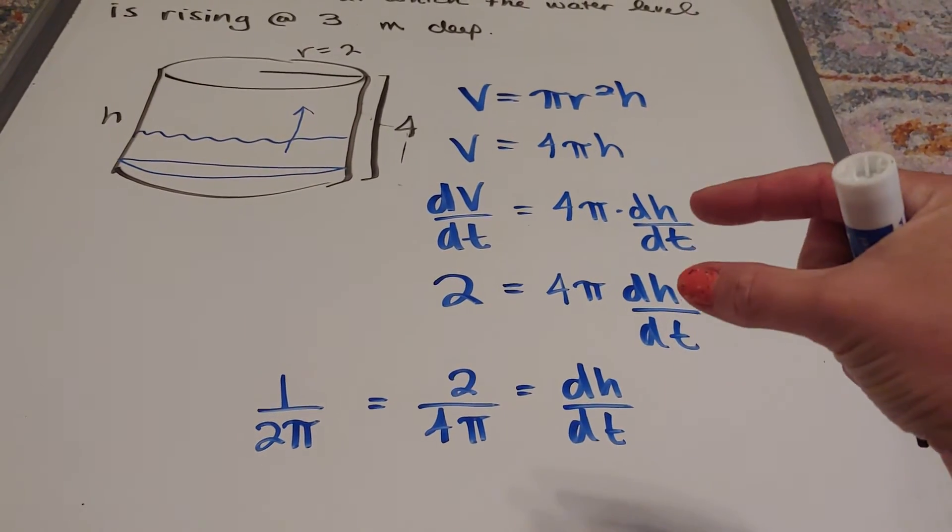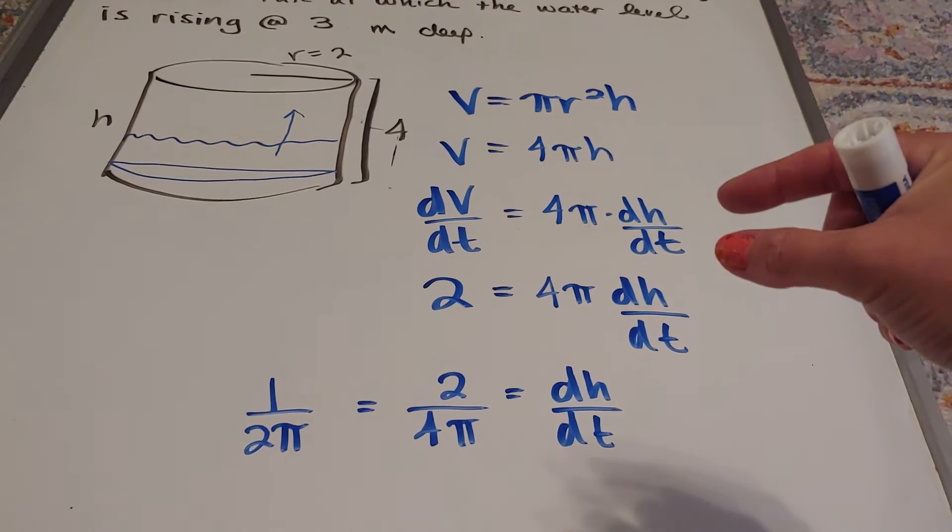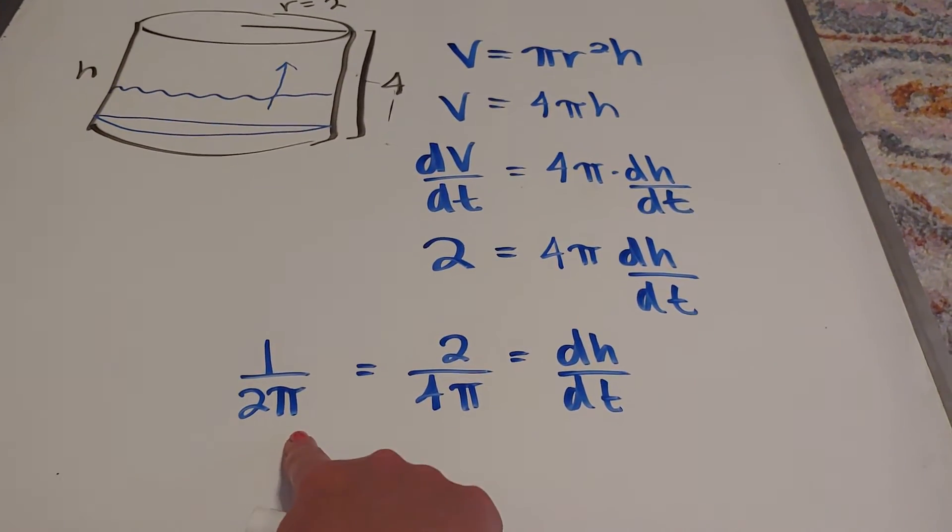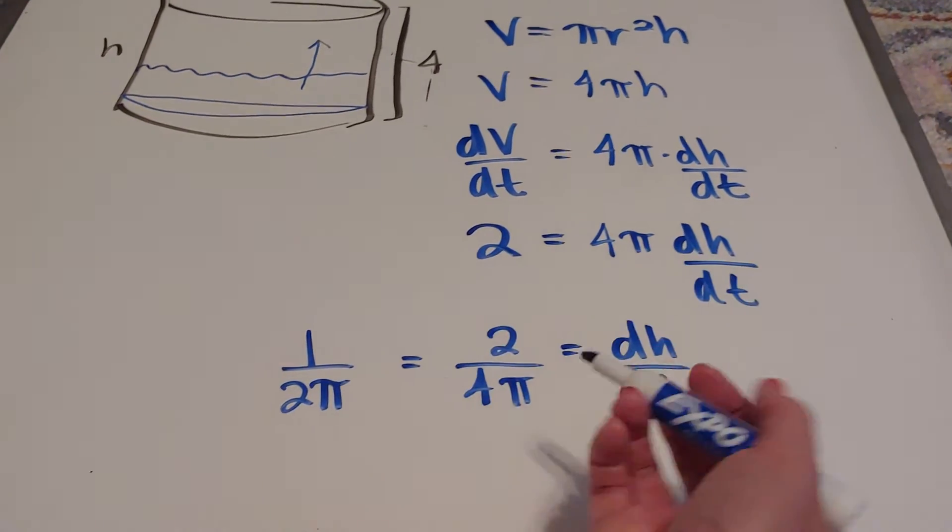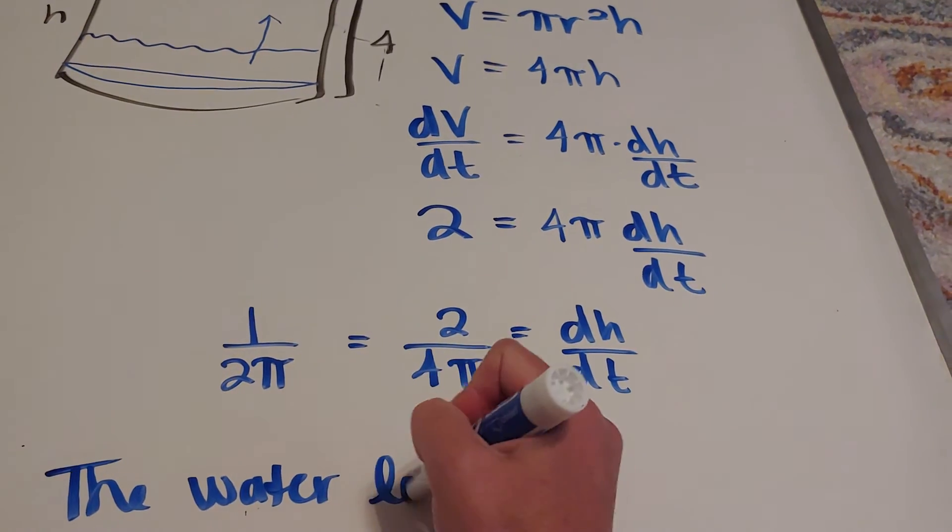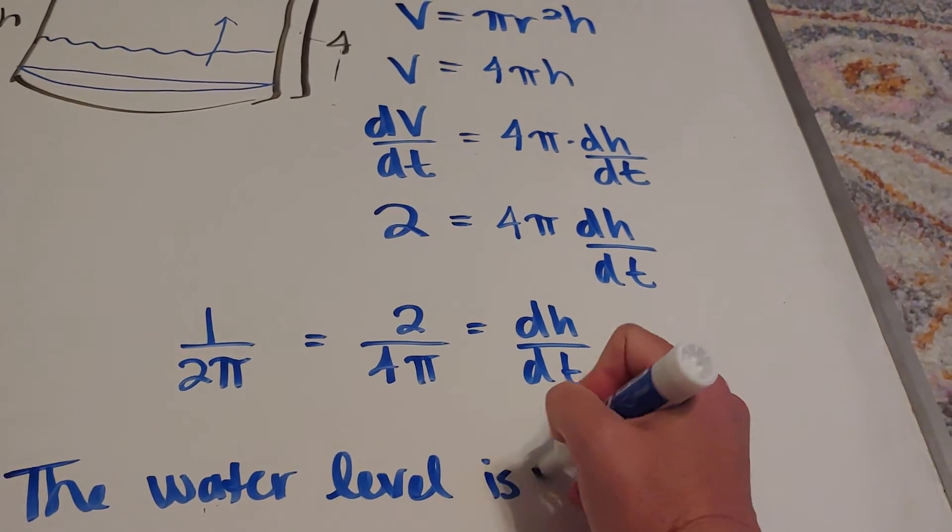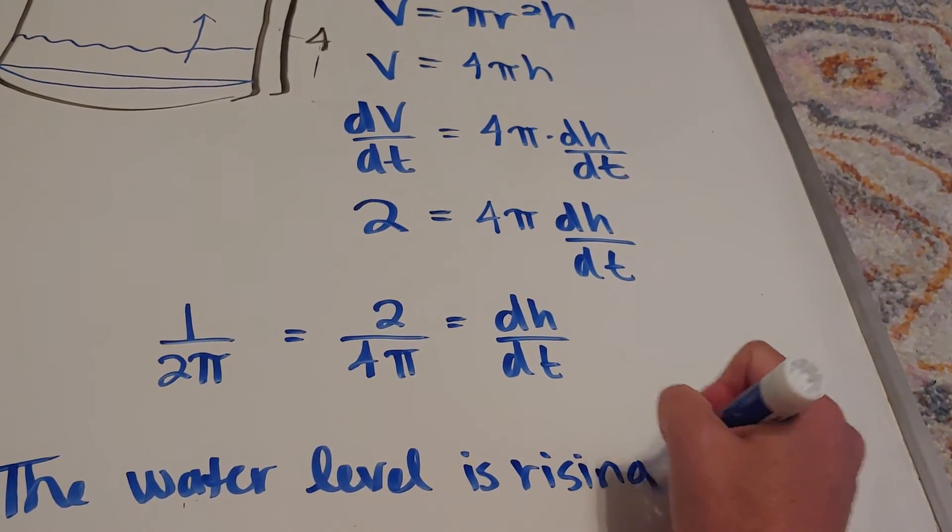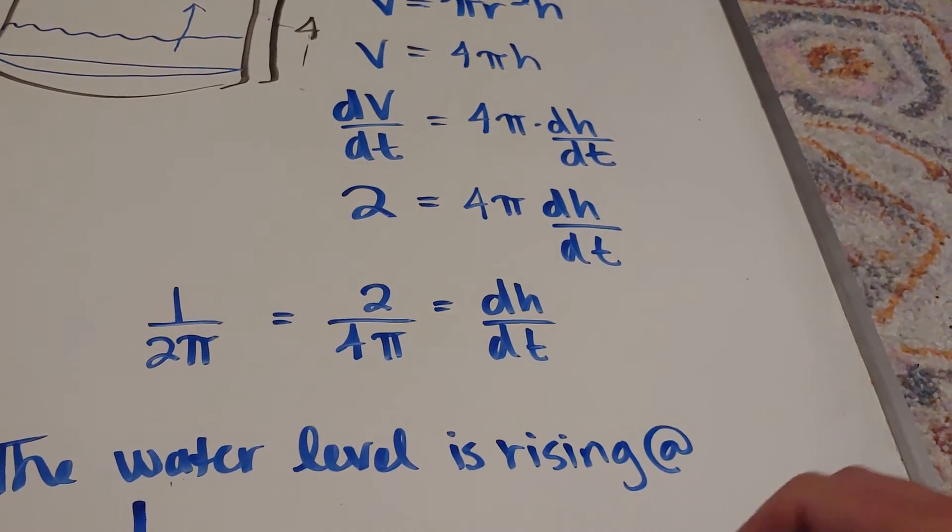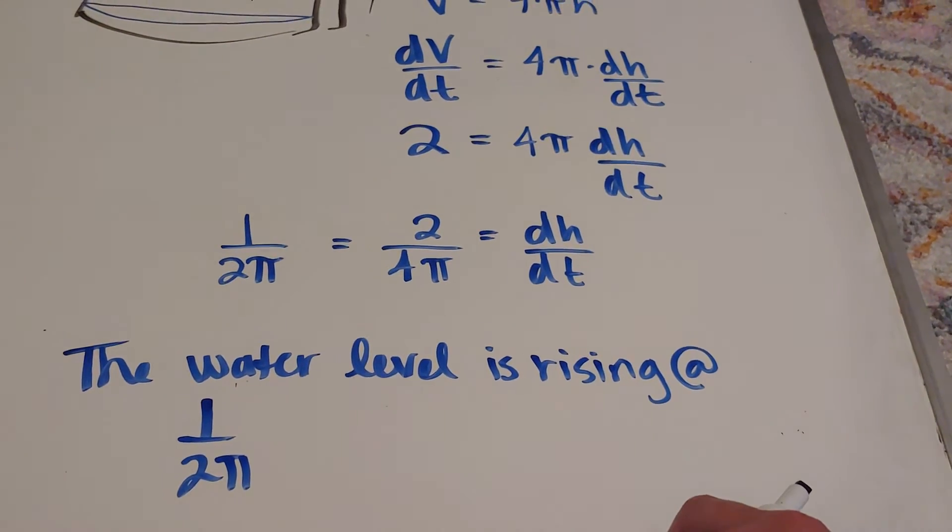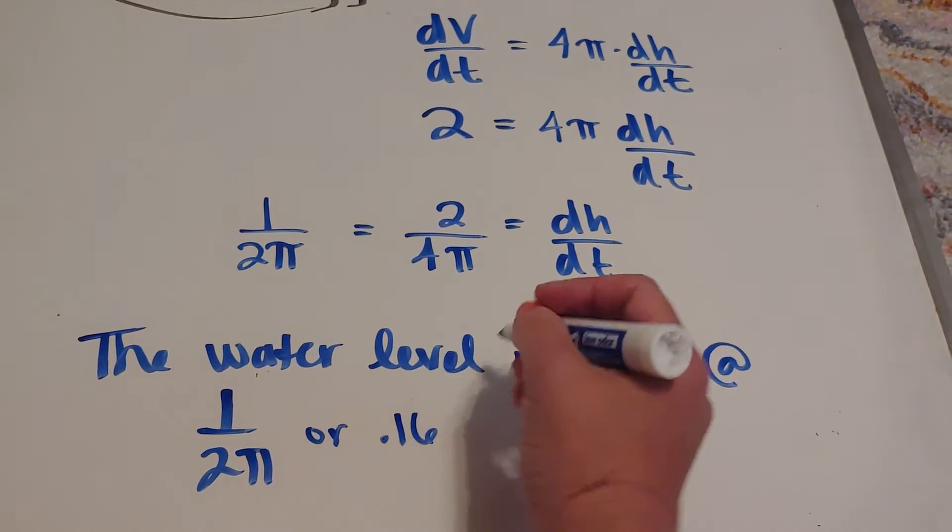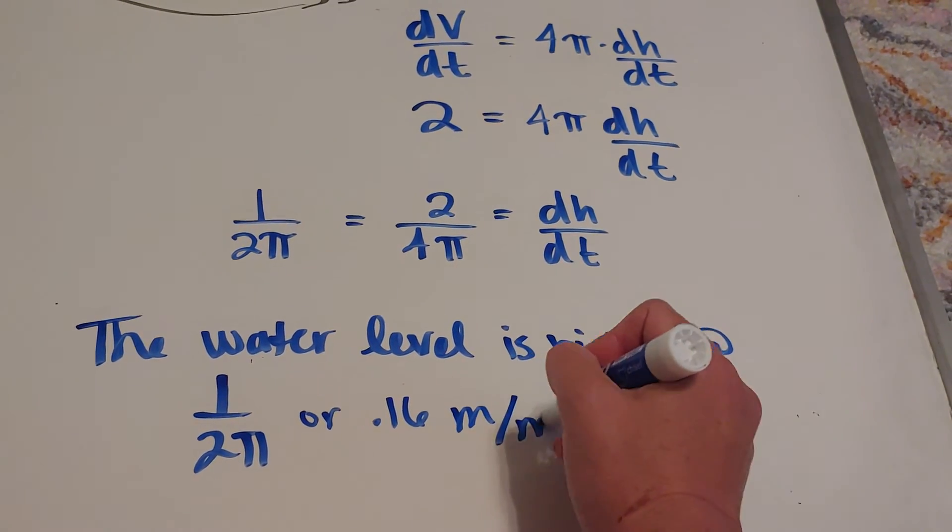So the constant rate that in this example it is raising at is 1 over 2 pi, so it doesn't matter if I'm at 1 meters deep, 2 meters deep, 1.3 meters deep, 3.7 meters deep, it's still going to be rising at this rate. So we would say that the water level is rising at 1 over 2 pi, and for those who are like, Jen, what number is 1 over 2 pi? Apparently it's the same thing as 0.16 meters per minute.